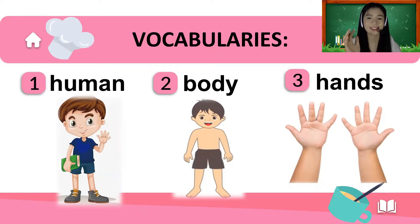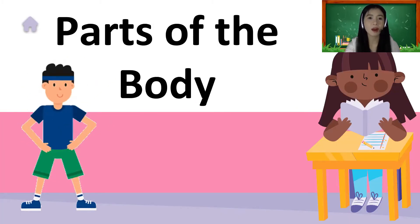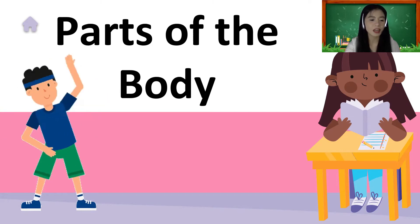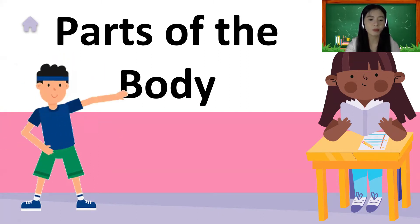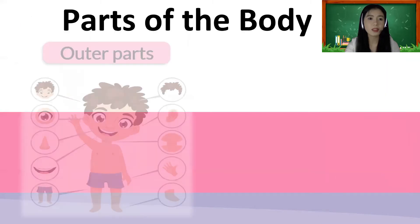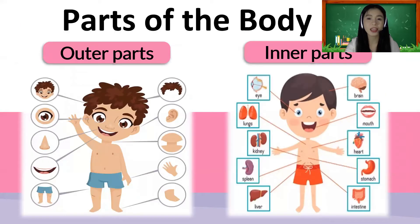Let's go back to our topic, which is the parts of the body. We are going to learn about the different parts of the body, which includes the outer parts and the inner parts. Let's start with the outer parts — outer parts means the organs that we can see.